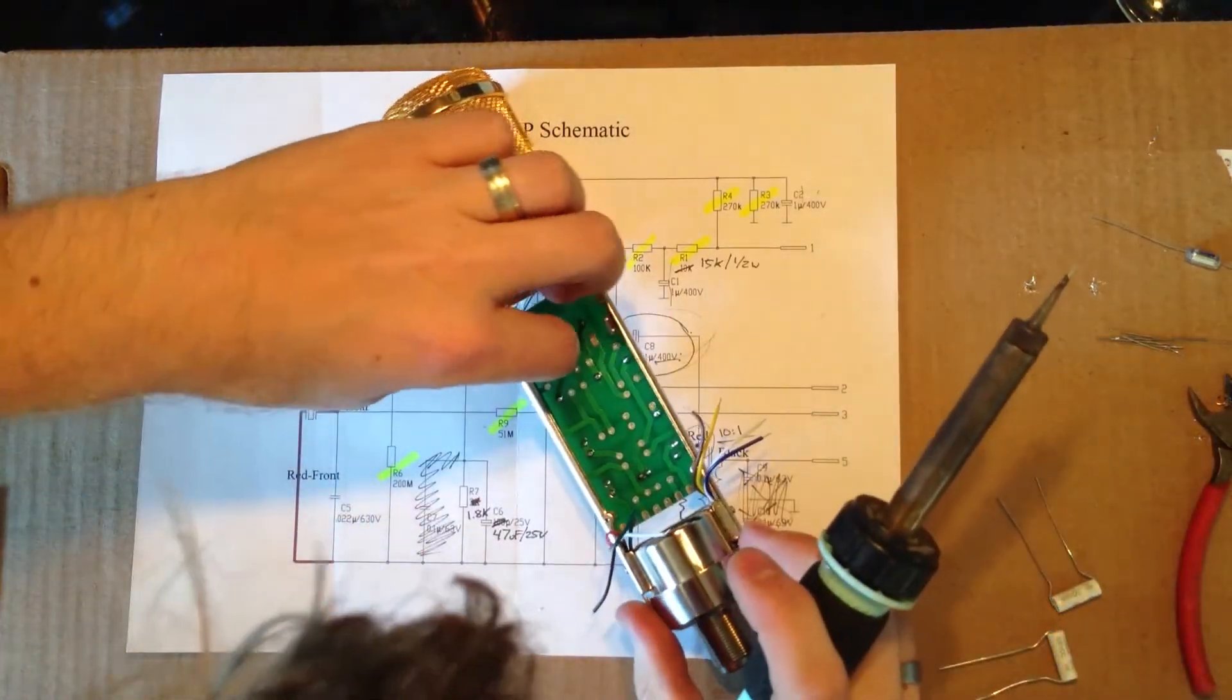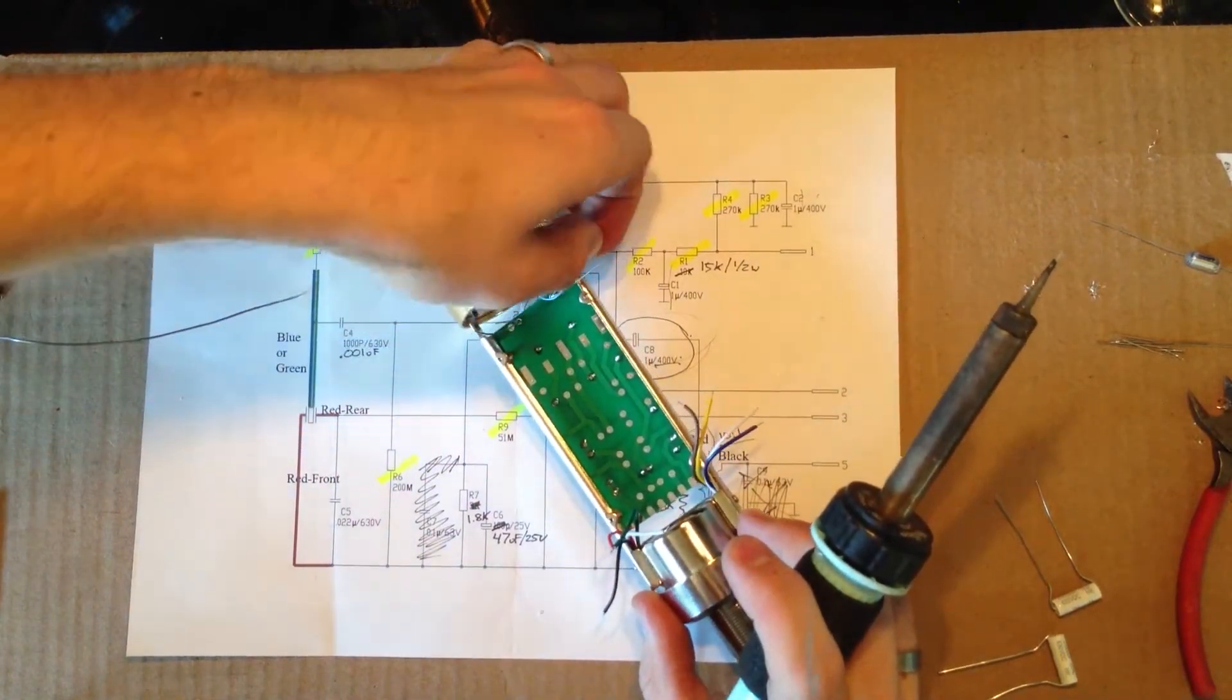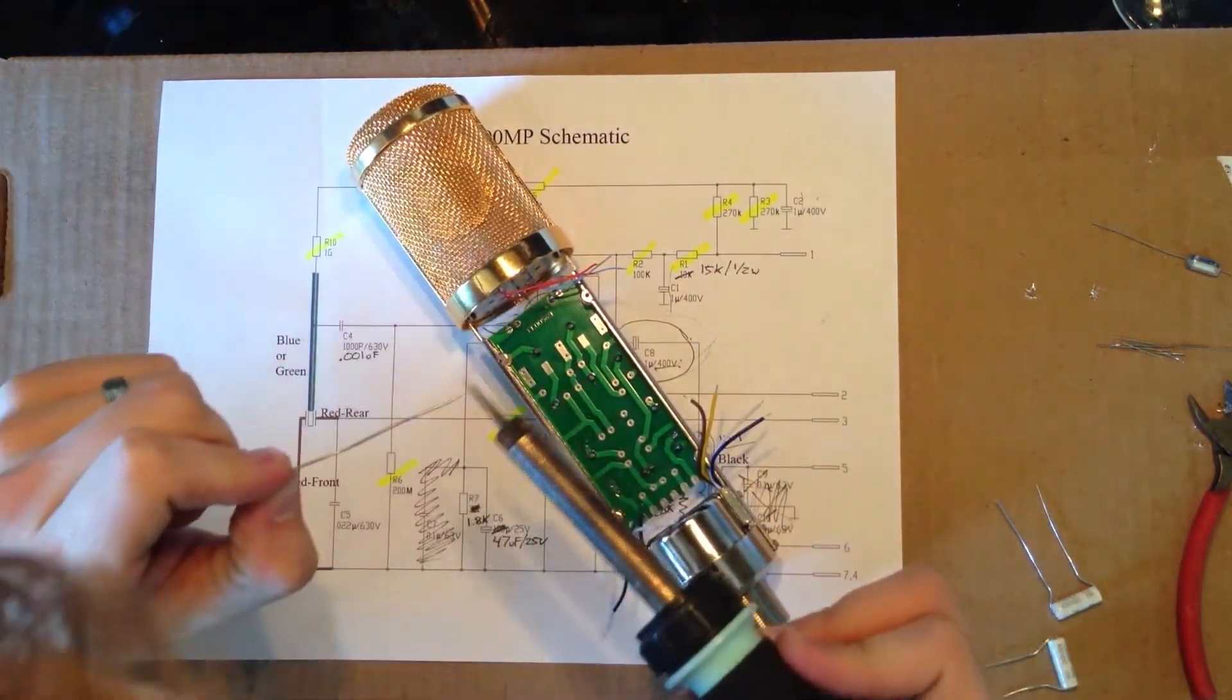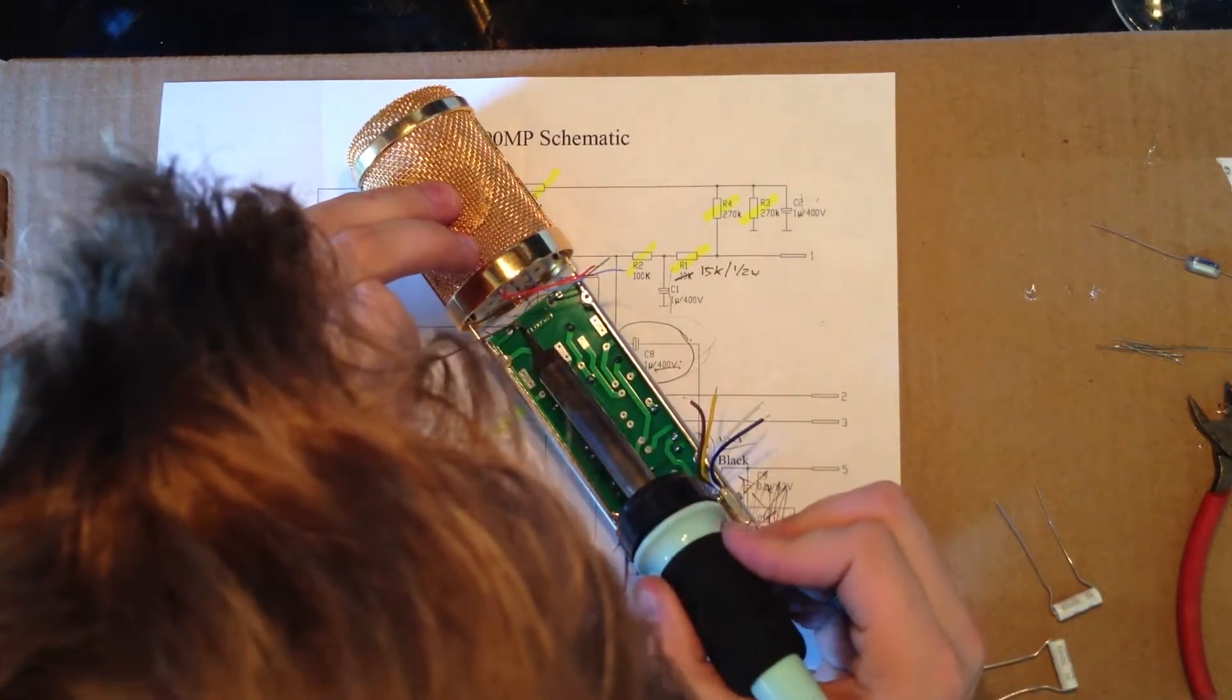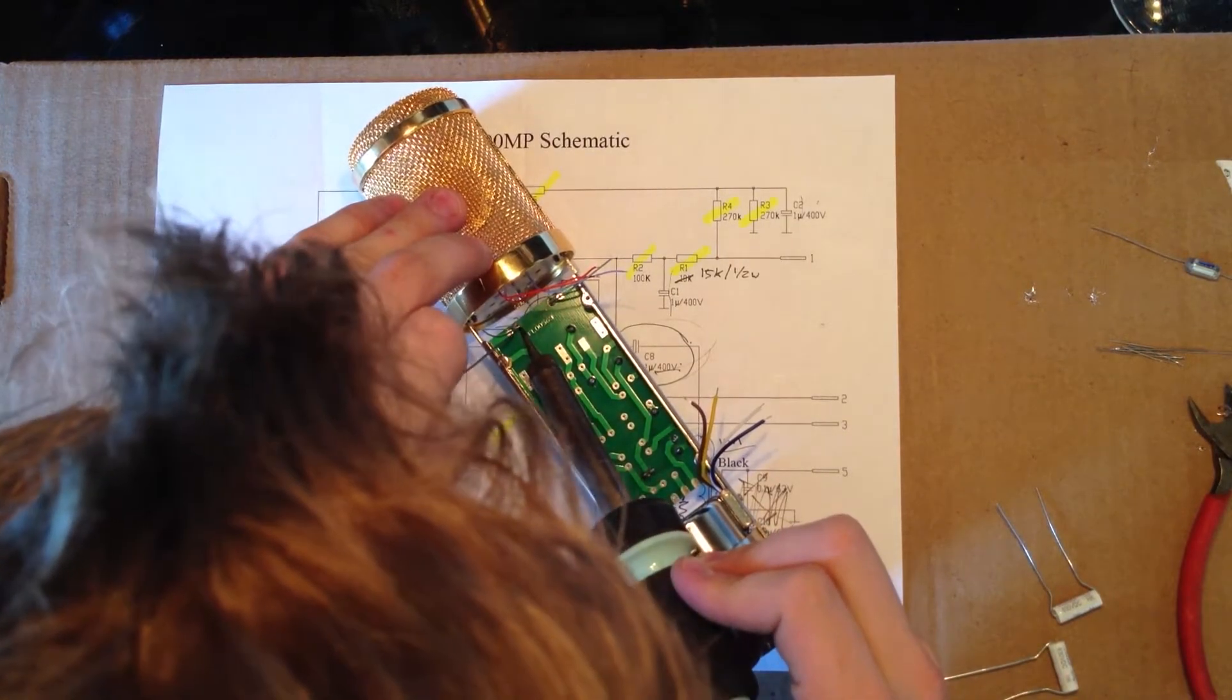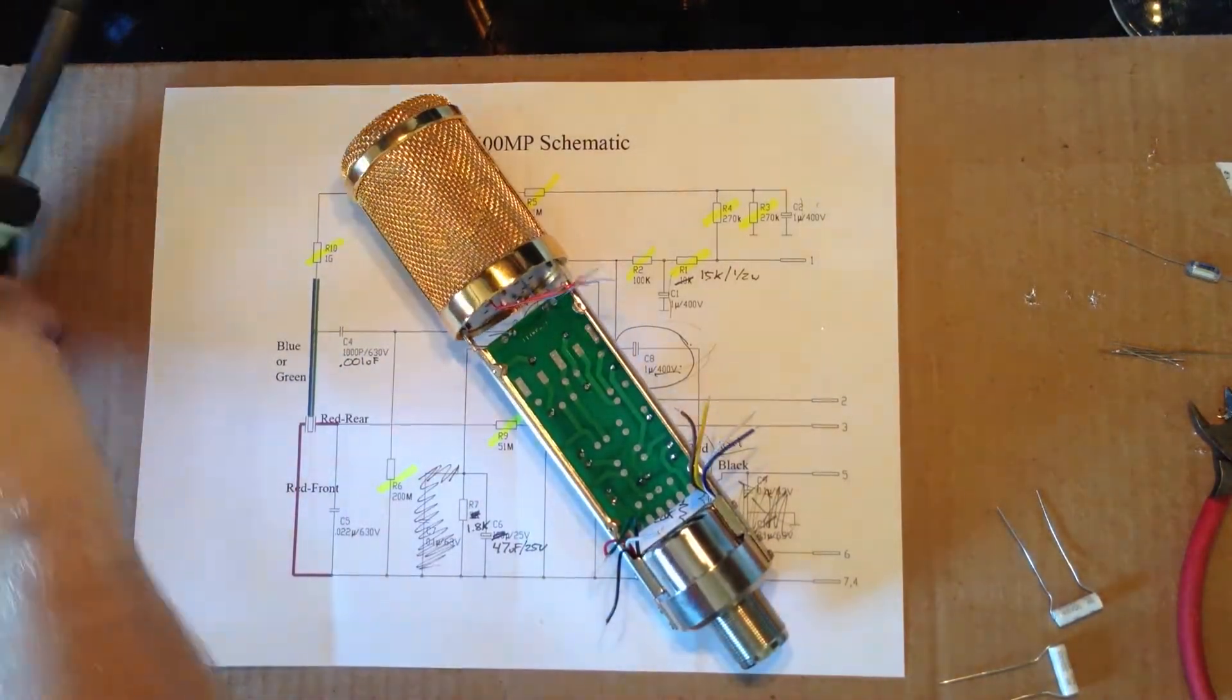Alright, so now what we're going to do is we're going to take these wires and move them to the other side. Okay, and then we're going to do the same thing down here. Add the heat. Add a little bit of solder. Wait for that to come on there. Go ahead and just work that heat in there. There we go. That one is done.